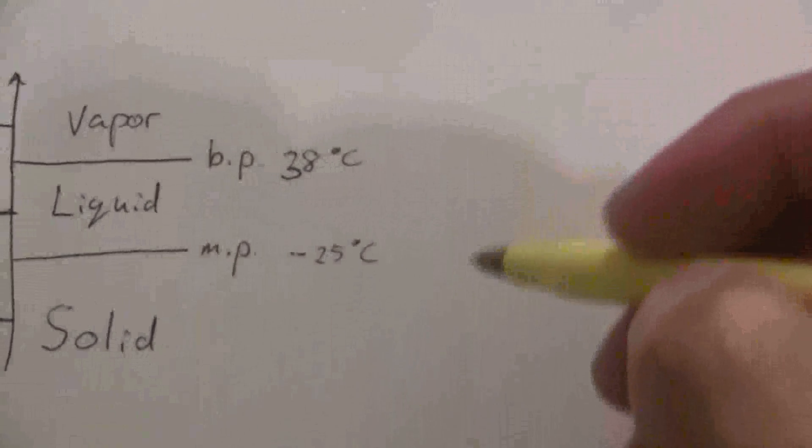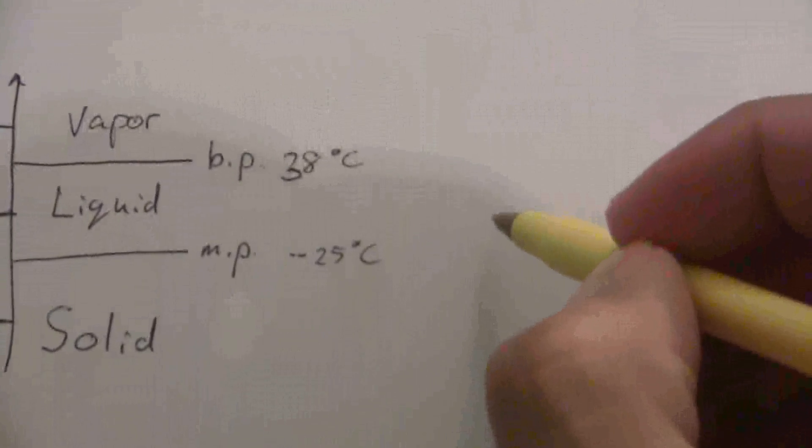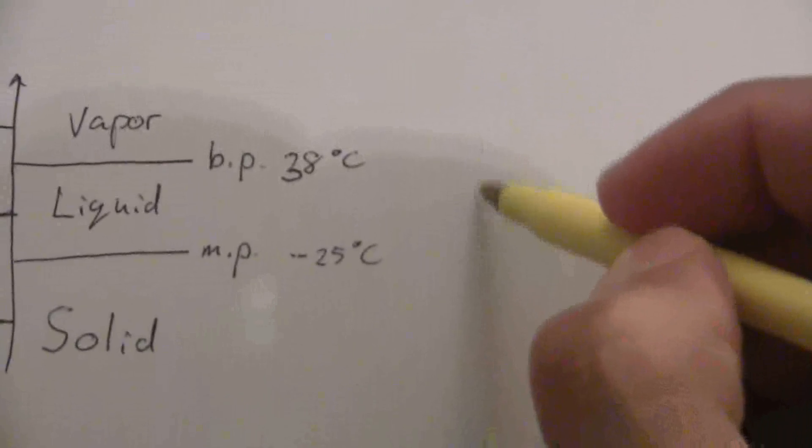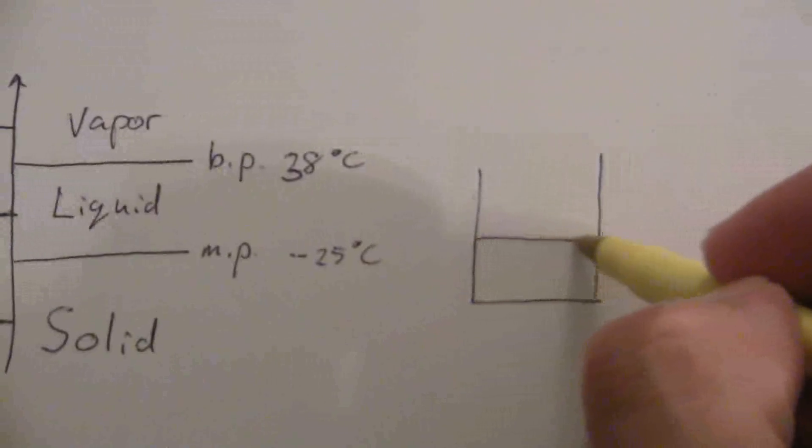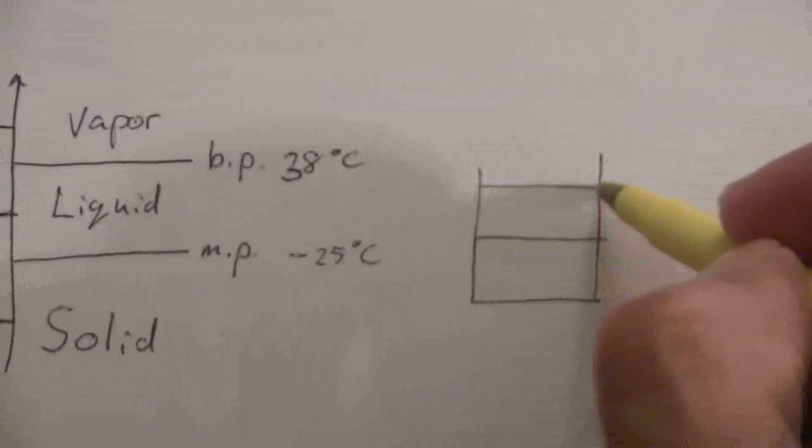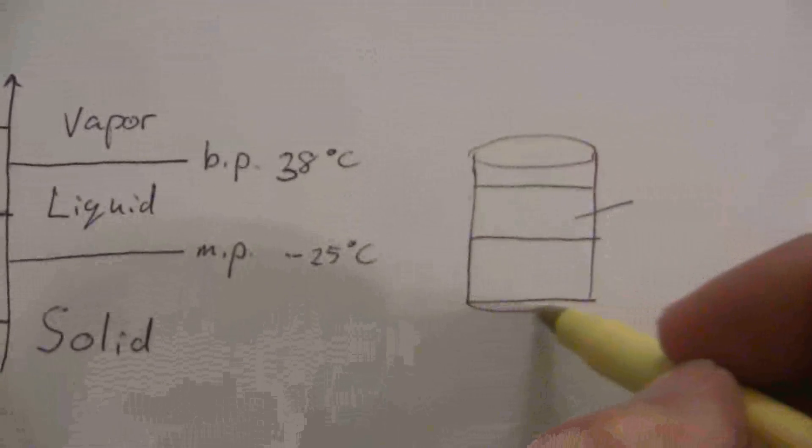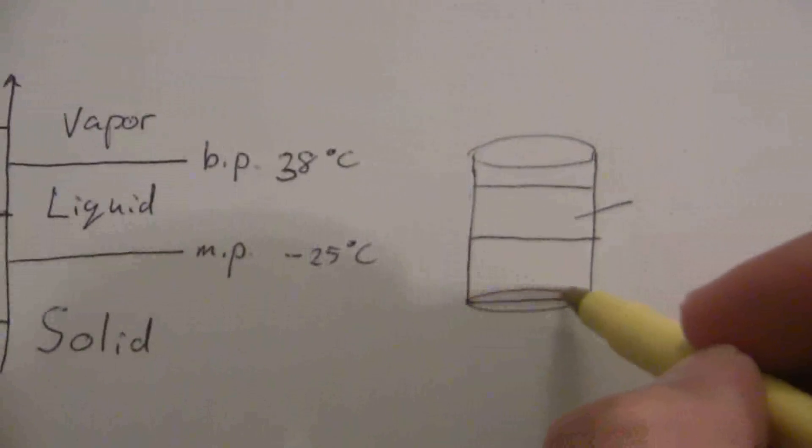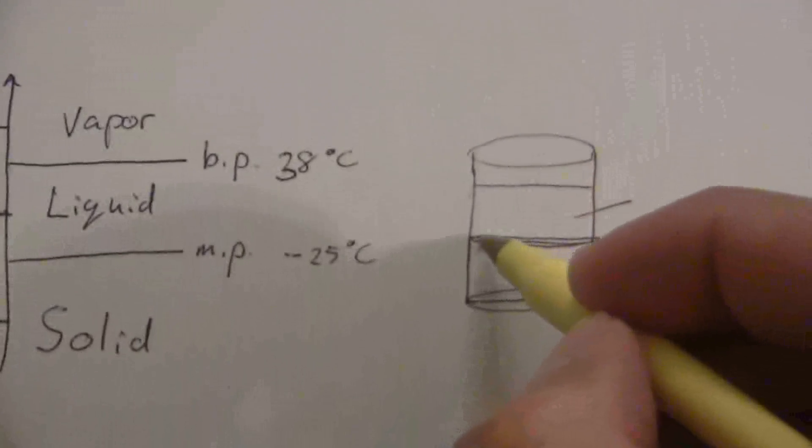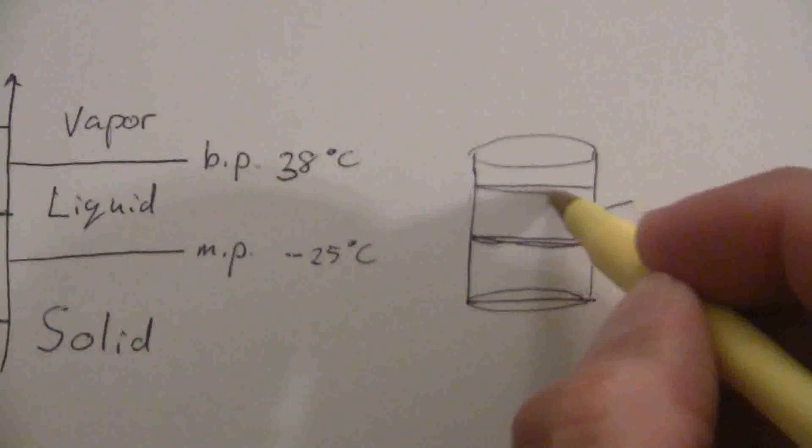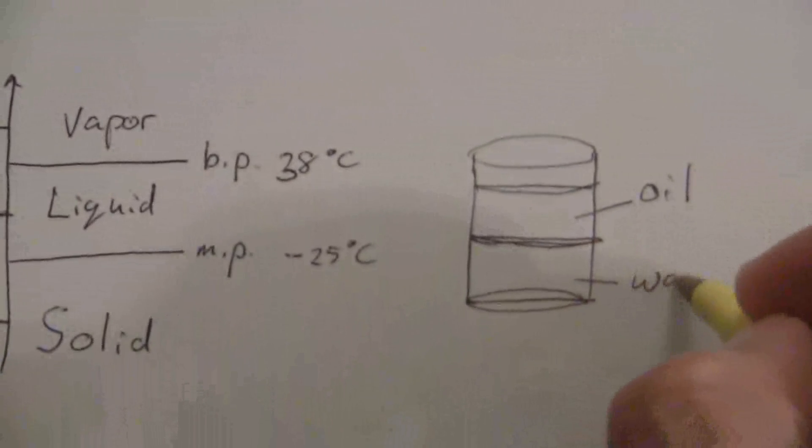And related problems may deal with density. If you have a substance, you've seen the oil and water demonstration. You have two layers in a glass. So there's our glass. And here we have on the top, we have the oil, and on the bottom, we have the water.